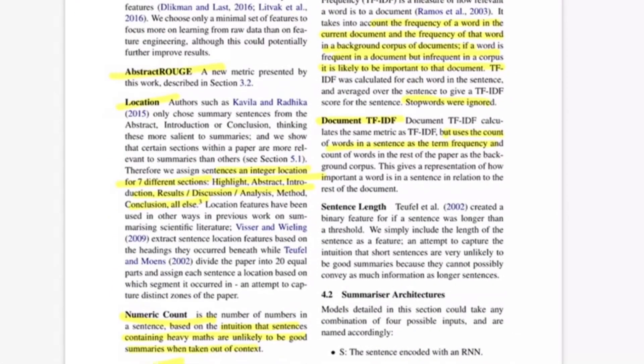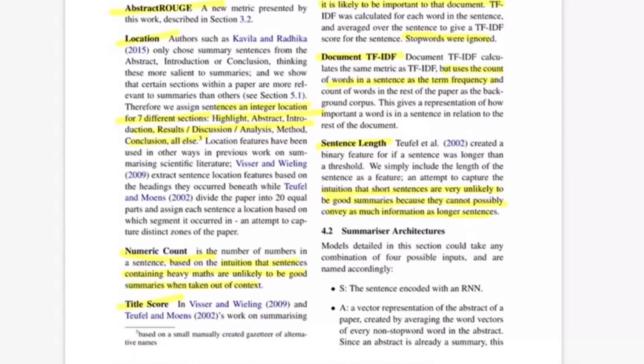Let's talk about the last feature which is sentence length. The intuition was shorter sentences are very unlikely to be a good summary because they cannot possibly convey as much information as longer sentences would. Which is a fair assumption to make. These are all the features authors have mentioned while thinking of how to represent a sentence.